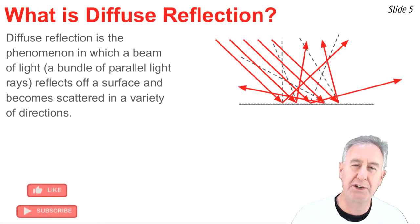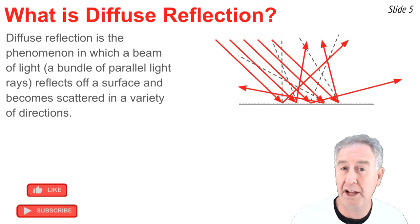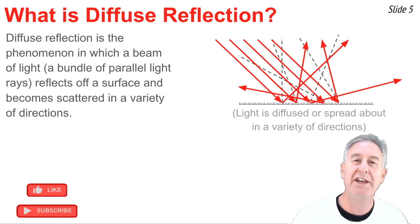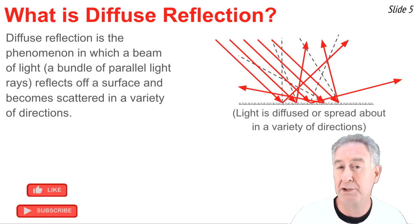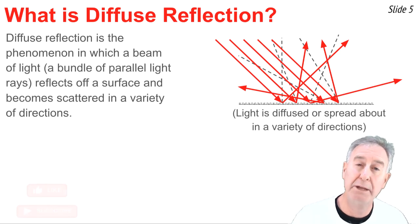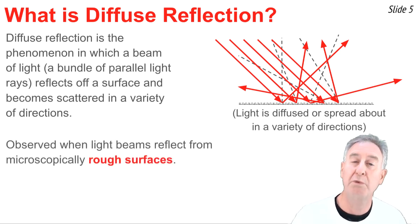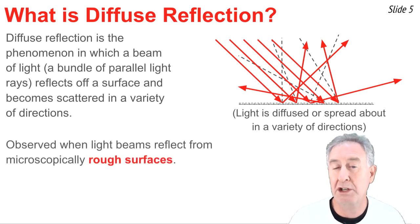When diffuse reflection occurs, that beam of light that strikes the surface is scattered in a variety of directions. The light rays are concentrated in the incident beam, but upon reflection, as shown in the diagram, they're going in all sorts of different directions. Instead, they're diffusing about the surface or spread about. This occurs whenever you shine a beam of light upon a microscopically rough surface, such as a sheet of paper that consists of fibers on its surface.